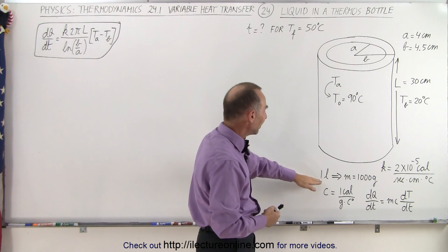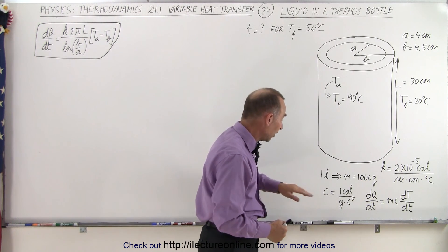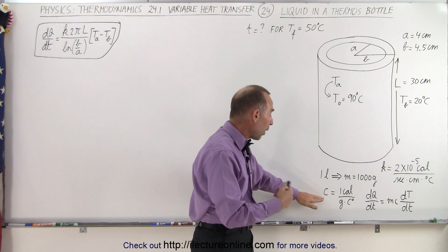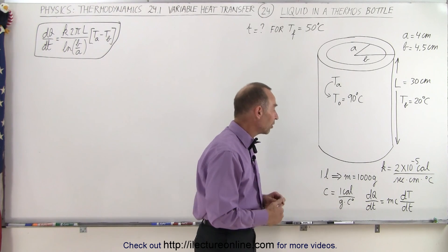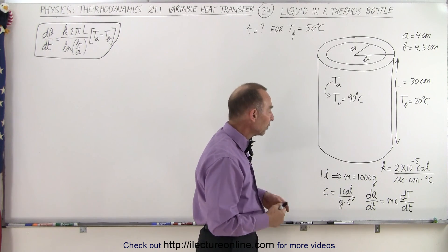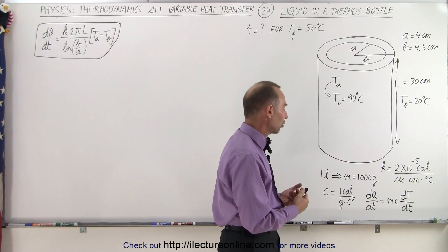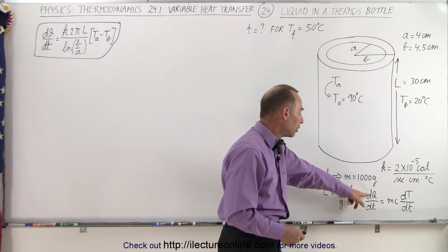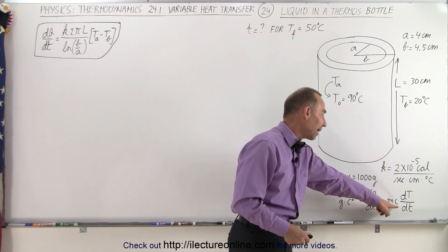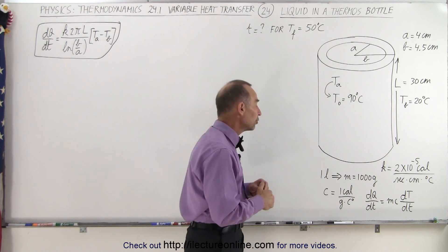Well it contains one liter of coffee, that means the mass is about a thousand grams. The specific heat for water is one calorie per gram per centigrade degree, and the amount of heat contained within the liquid, q, would be mc times T. If we put that into a differential equation, the heat loss dq/dt is going to be equal to the mass times the specific heat times the change of the temperature per unit time.